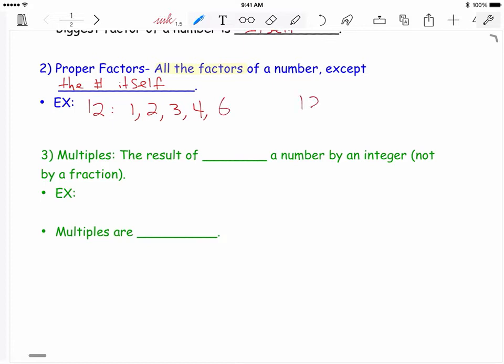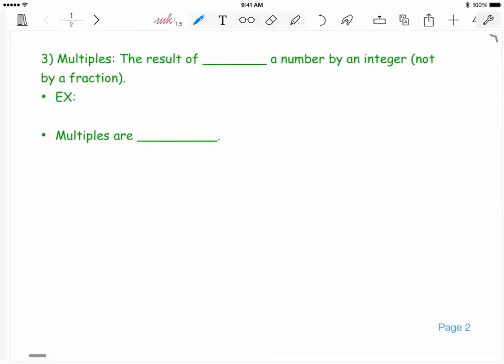The last word is multiples. This refers to the result of multiplying a number by another whole number, not by a fraction. For example, the multiples of 3 can be 3, which is 3 times 1, 6 which is 3 times 2, 9 which is 3 times 3, and so on. We can continue this process forever, so multiples are endless, which we can also call infinite, a fancier word for endless.